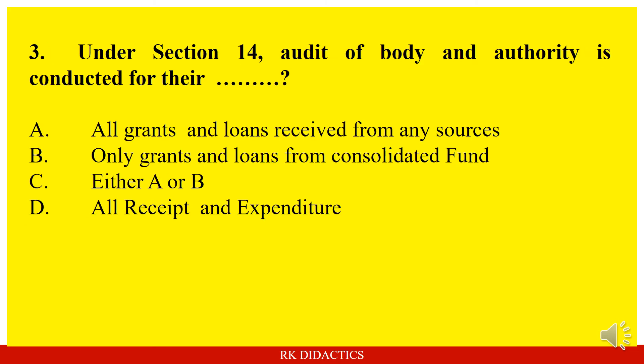Question: Under Section 14, audit of body and authority is conducted for their — Option A: All grants and loans receipts from any sources. Option B: Only grants and loans from Consolidated Fund. Option C: Either A or B. Option D: All receipts and expenditure. Answer: All receipts and expenditure.